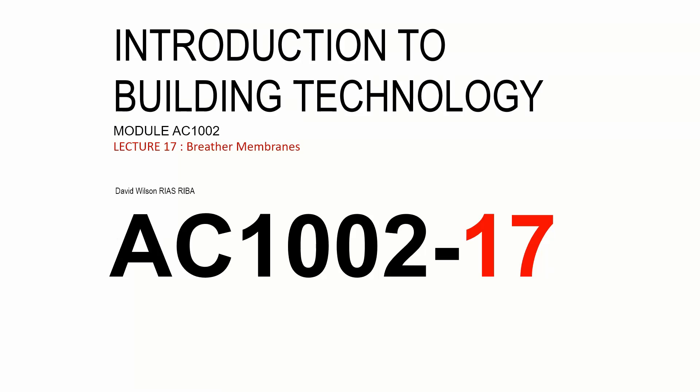Hello, this is the 17th lecture for AC 1002. I'm becoming conscious of how I say hello or how I say welcome, so hopefully it's not annoying you as much as it's annoying me. This lecture builds on some information about the building envelope and carries on information that we would have learned in lecture 15. So if you haven't watched the earlier lectures, try and watch them in order.